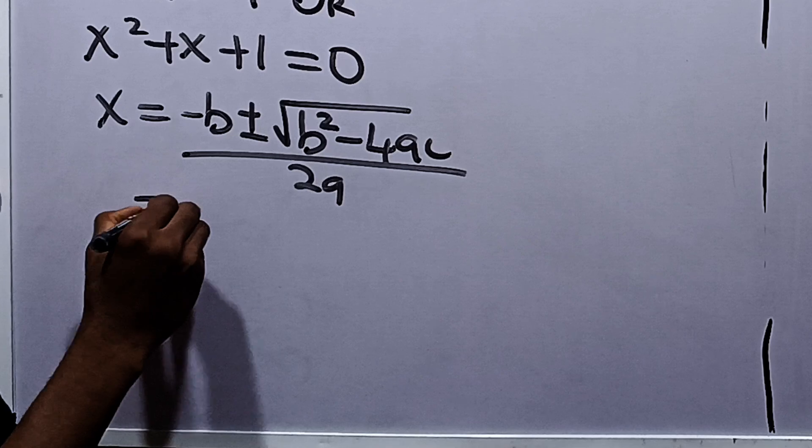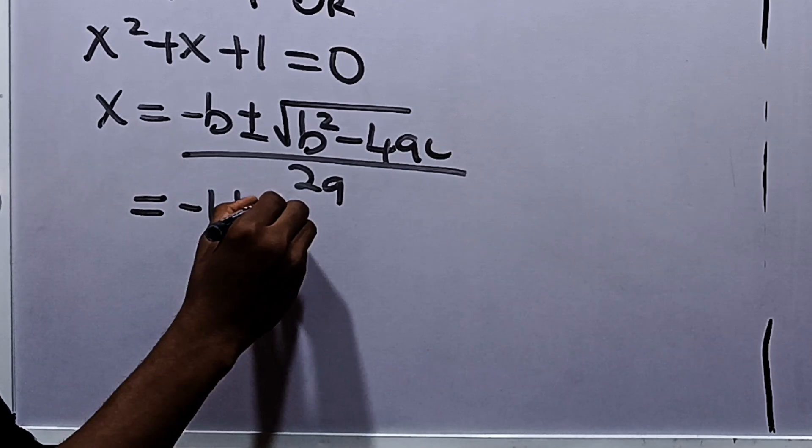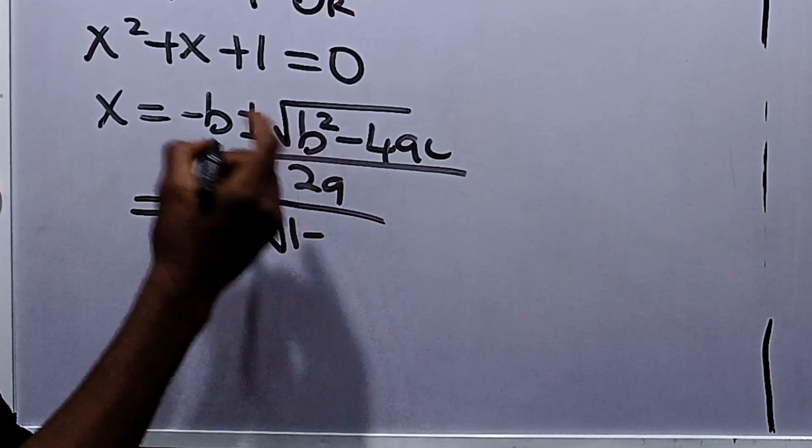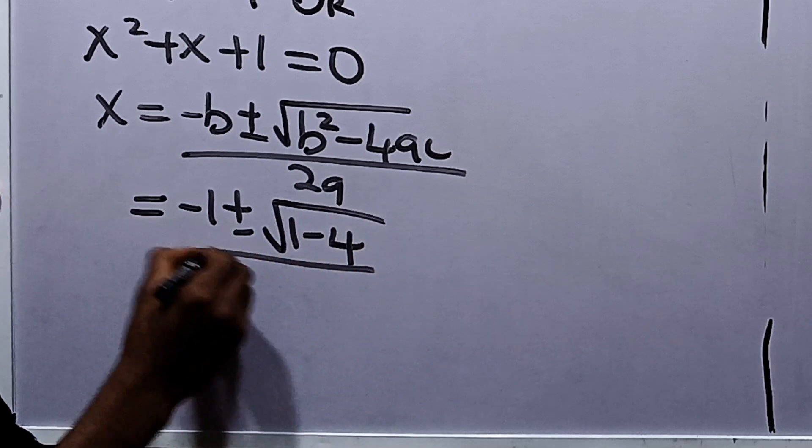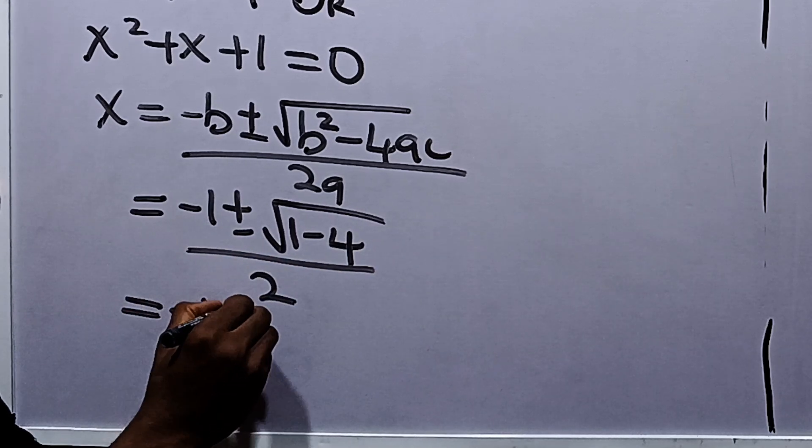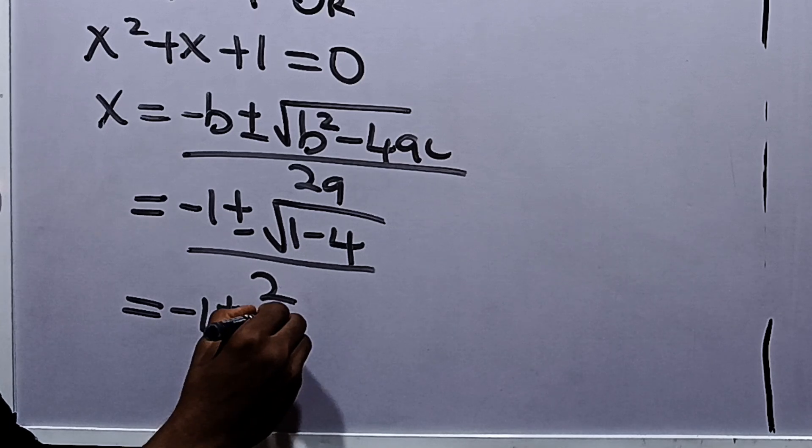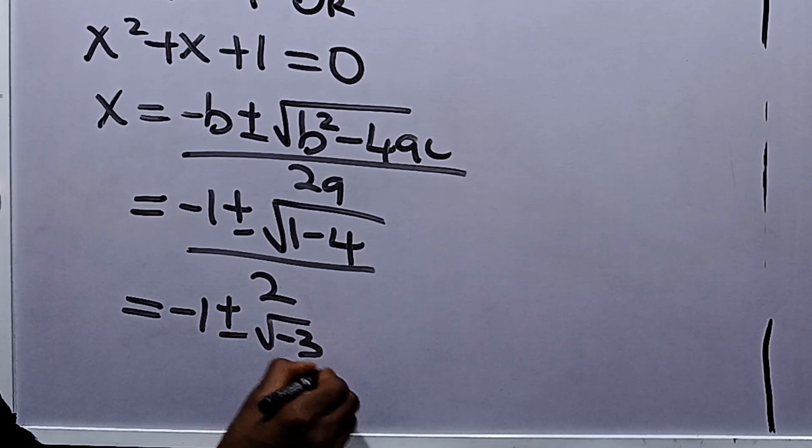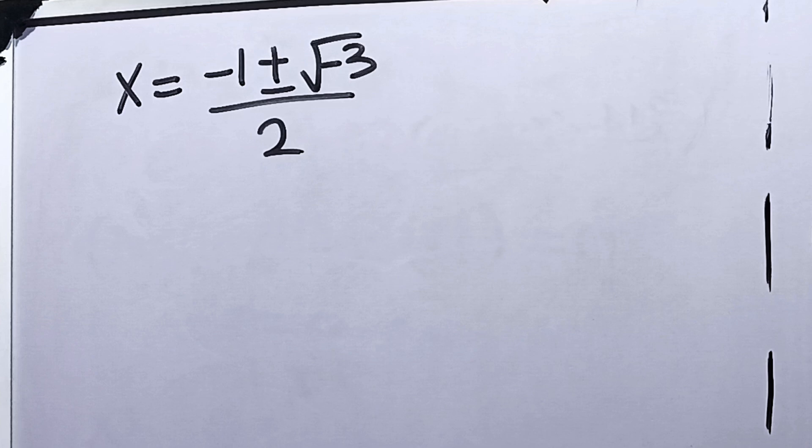So this is equal to minus 1 plus or minus, 1 squared is 1 minus 4 times 1 is 4, divided by 2 times 1, which is 2. This is now equal to minus 1 plus or minus root of negative 3 over 2.